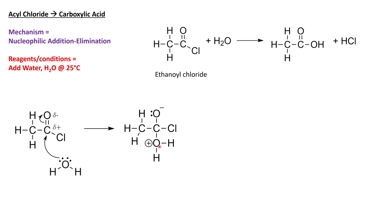That positive charge is because this oxygen has three bonds, whereas oxygen ordinarily only makes two bonds — it's using one of its electrons from its lone pair to make this bond, and as a result it becomes positively charged. Now we need the elimination part of the mechanism. Comparing this intermediate to our final product, we can see it definitely doesn't have this chloro group, so this is the group that we're going to eliminate.